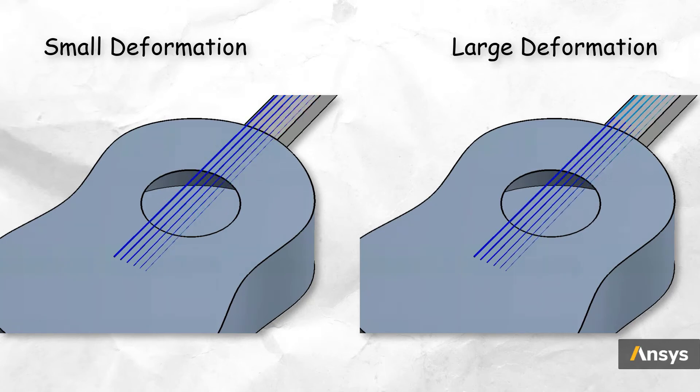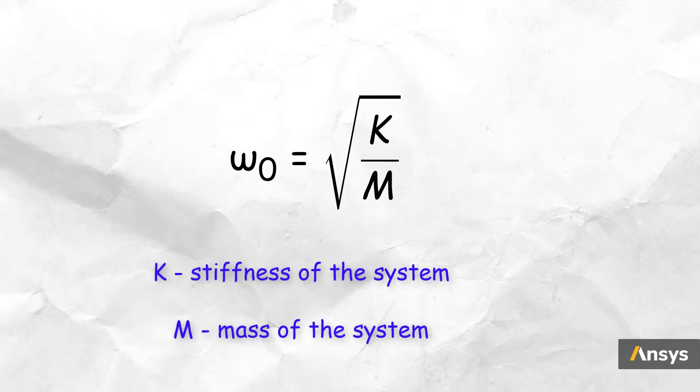This is because when we use large deformation, the stiffness of the strings increases due to the stress stiffening, and from the relation of natural frequencies, we see that this will increase the natural frequencies. As a result, the strings vibrate with smaller amplitude.